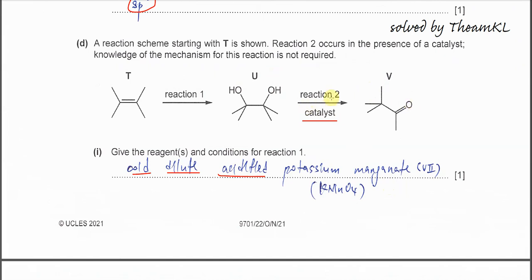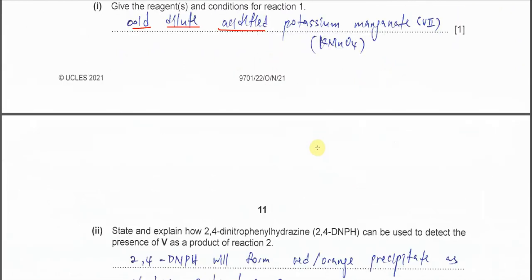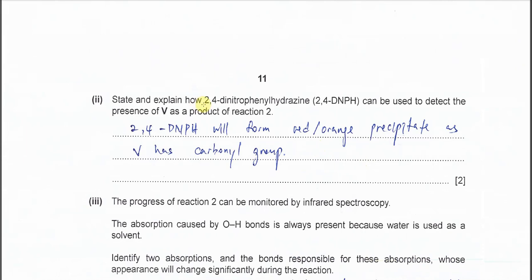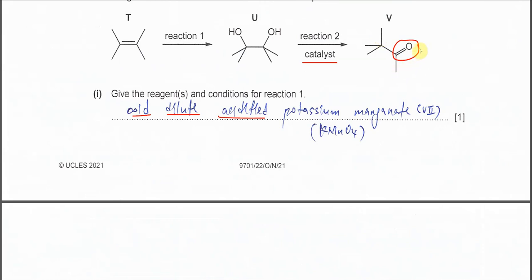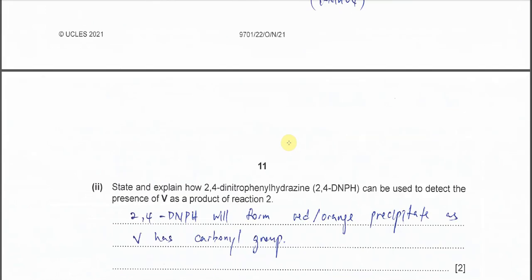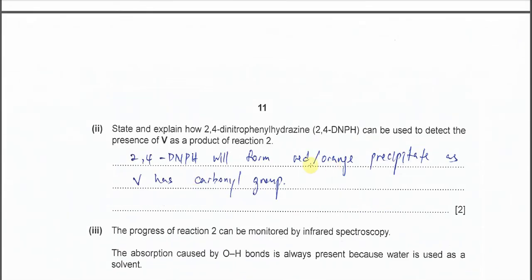State and explain how 2,4-DNPH can be used to detect V. Very easy. When we use 2,4-DNPH, it will react with V and form orange precipitate. Orange precipitate because V has a carbonyl group.